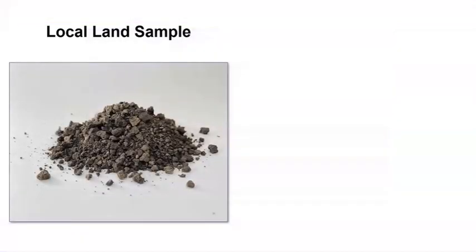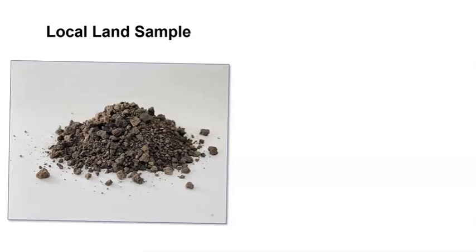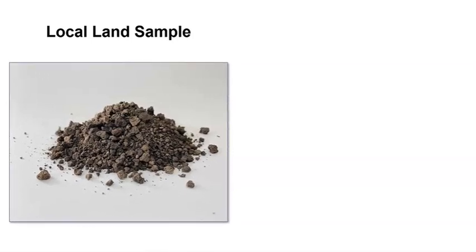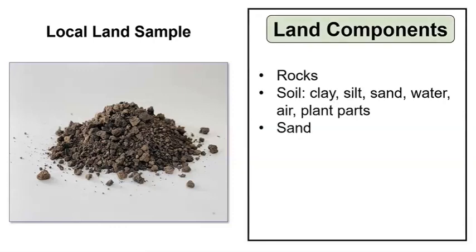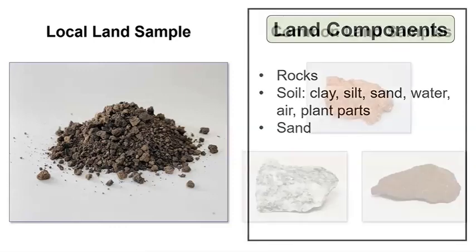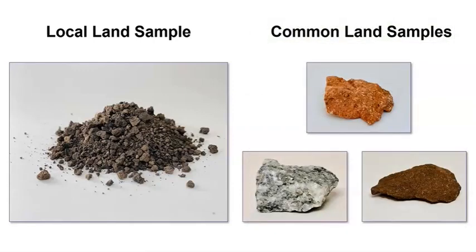During our last lesson, we observed and described a local land sample from Yosemite National Park. We noticed that rocks can be a component of land. If rocks are a component of land, why do you think the local land sample from Yosemite looks different from these rocks?